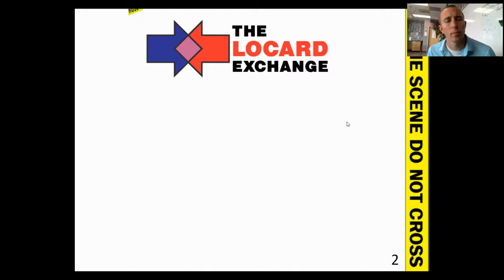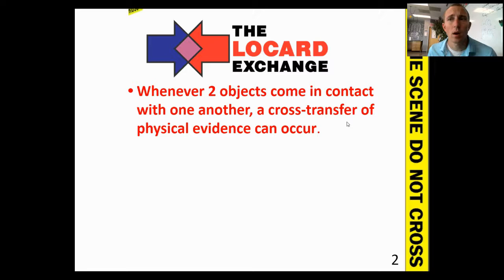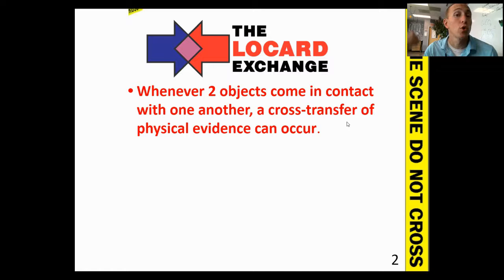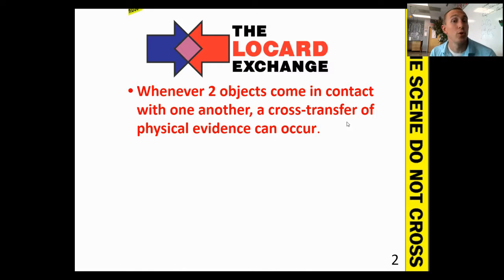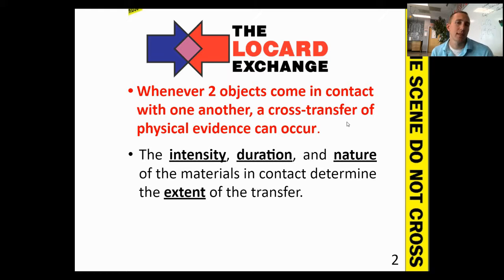Early in this semester we talked about different forensic scientists, and one of the most famous is Edmund Locard. Locard's exchange principle states that whenever two objects come into contact with each other, there's going to be some sort of transfer. Physical evidence is going to be left on both of those objects. For example, if someone has soil on their shoes and walks through a classroom, or if you have fibers on your clothes, as you sit down and stand up, you leave microscopic trace evidence behind. It's the job of a forensic analyst to find those pieces of evidence, whether microscopic or macro.